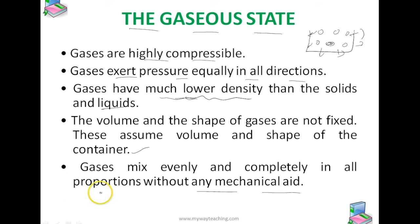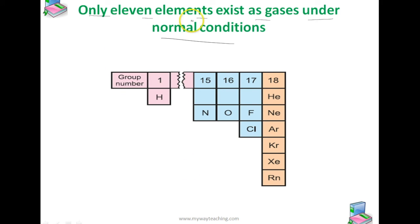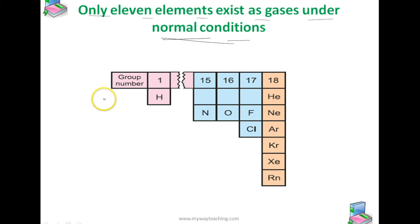Properties such as pressure, volume, temperature, and mass are very important because the relationships between these variables describe the state of the gas. Only 11 elements exist as gases in the periodic table, and later the gas laws will be explained in detail.